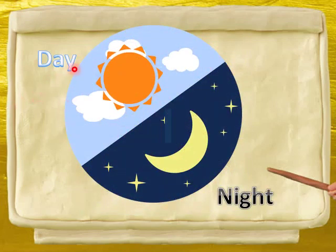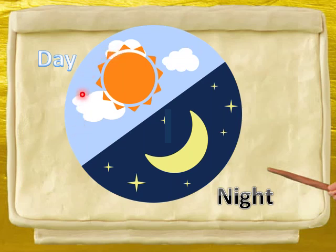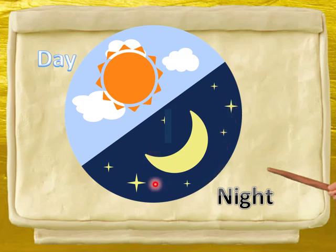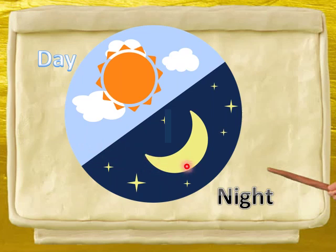Children, यह है day time, यानि दिन. और यह है night. Day में हमें क्या दिखाई पड़ता है? Sun दिखता है और light होती है sun की, तो हमें सब चीजें अच्छे से दिखाई पड़ती है. हमको sky भी blue color का नज़र आता है. लेकिन उसका ठीक opposite होता है night. Night में हमको सारी चीजें black नज़र आती हैं — sky भी बिल्कुल black दिख रहा है. और हमें moon और stars दिखते हैं. कभी हमने night में sun देखा? No. कभी हमने morning में moon देखा? No. तो day का opposite है night, क्योंकि यह दोनो completely different हैं.